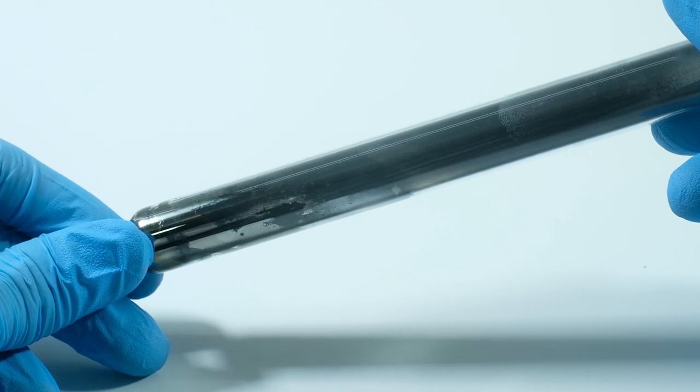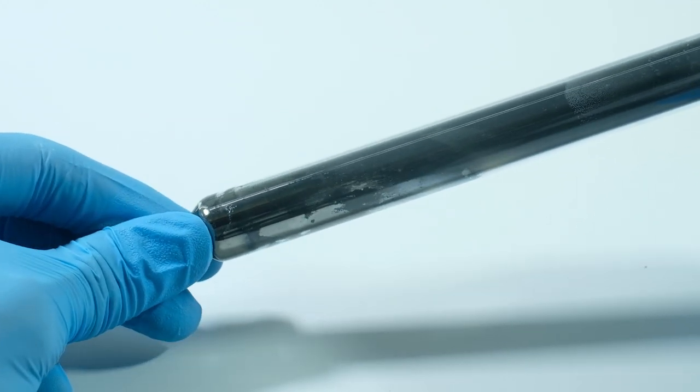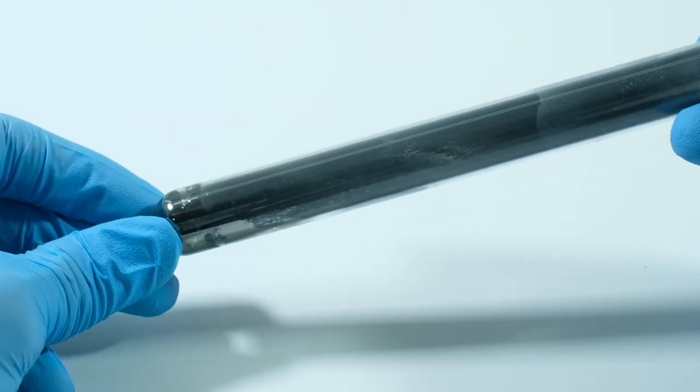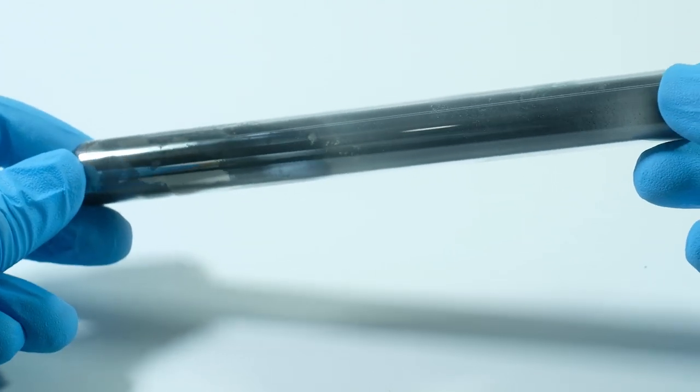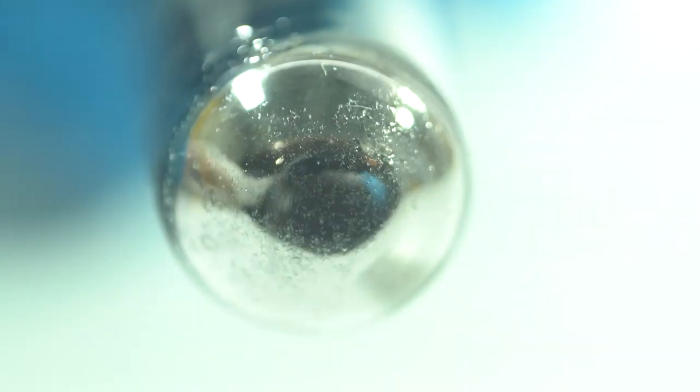After complete decomposition of chromium hexacarbonyl, we got a test tube coated with chromium on the inside. This is the main industrial use of this substance, chromium plating. Don't forget to like.